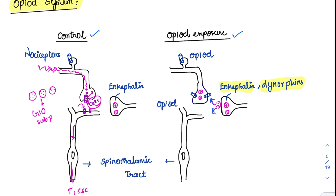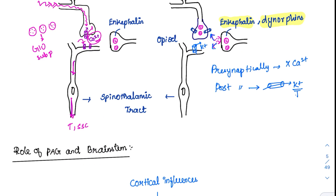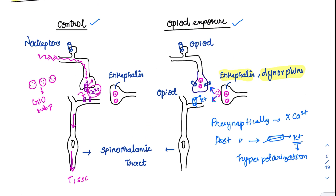Presynaptically, the opioids block the calcium channels to decrease neurotransmitter release. Postsynaptically, they increase the permeability of potassium, causing potassium to move out of the cell. With more potassium moving outside, there is less positive charge inside, causing hyperpolarization. Because of this hyperpolarization, pain transmission is stopped.